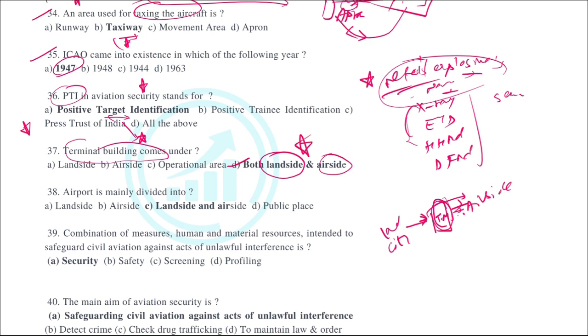The airport is mainly divided into the land side and the air side. If you consider the terminal building itself as part of the airport, it has both a land side and an air side.